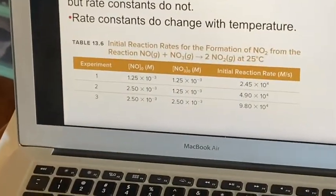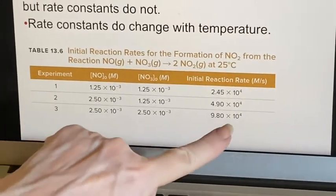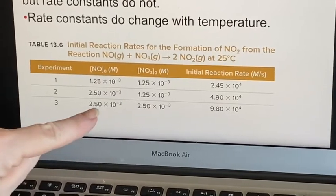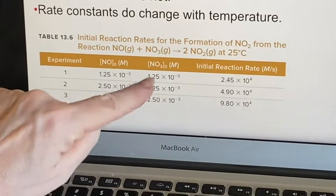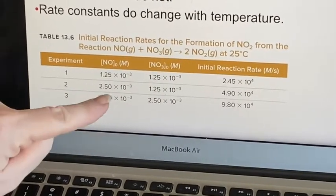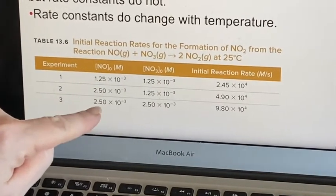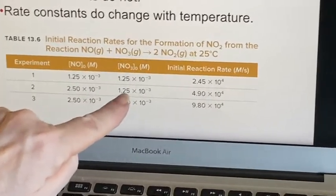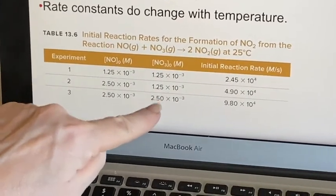If I look at experiment three, I see these numbers and I would make my life very difficult if I compared three to one because then I would have two things that changed at the same time. However, if I compare three and two, I can see that the nitrogen monoxide is unchanged, the nitrogen trioxide was doubled, and look, this was also doubled.